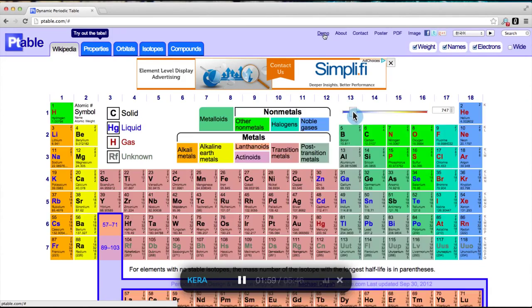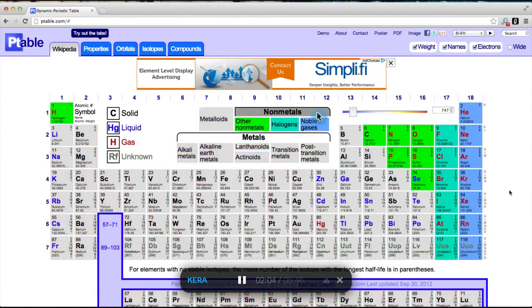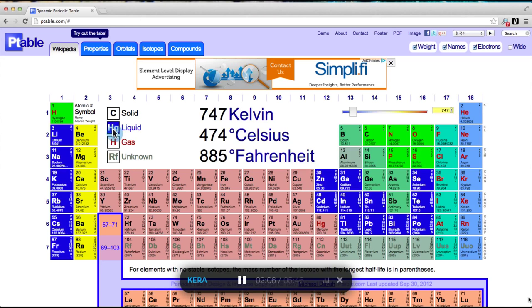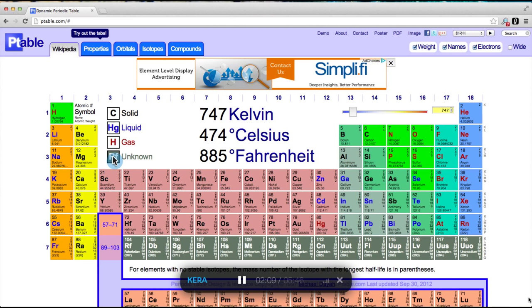As we adjust the slider, element symbols will change color to indicate their state of matter at that temperature. To make the states more obvious, hovering over the legend will color their background instead of symbol. The mouse wheel also manipulates the slider.